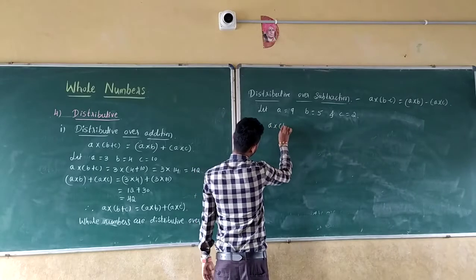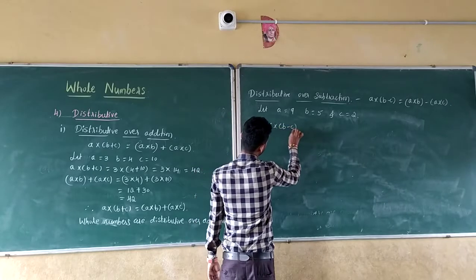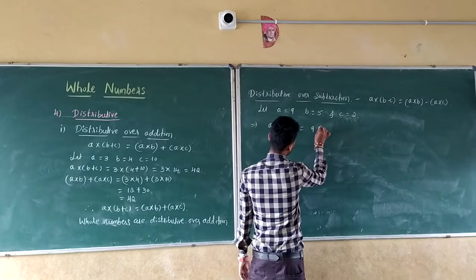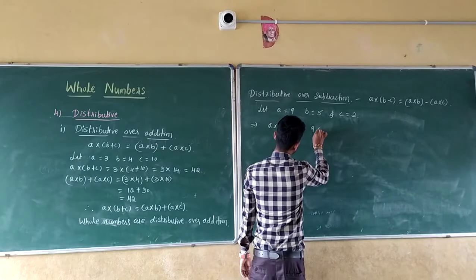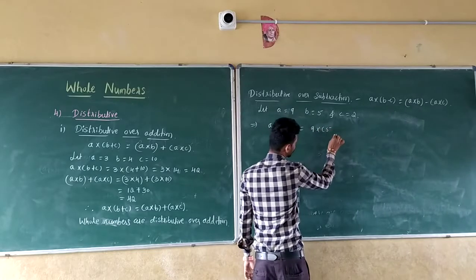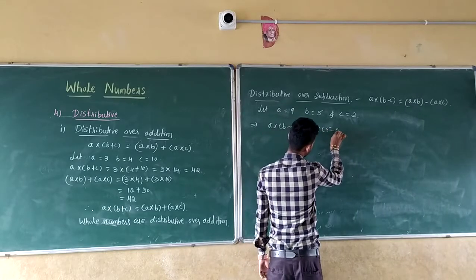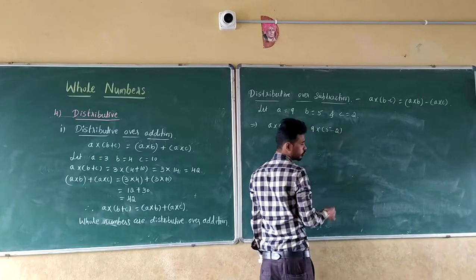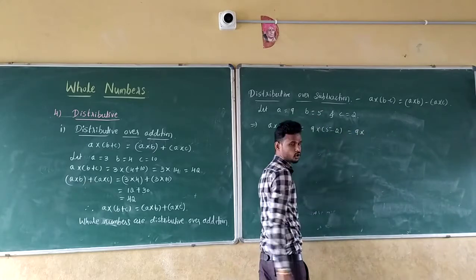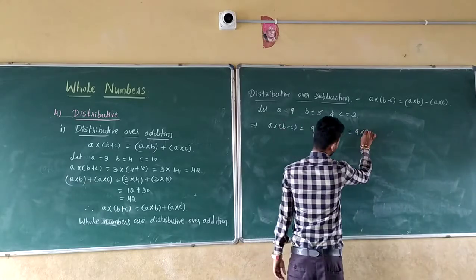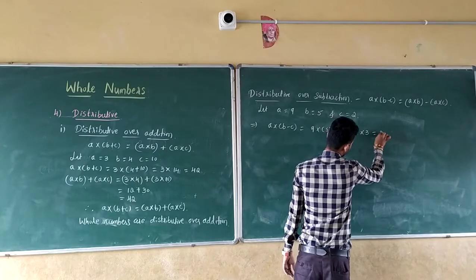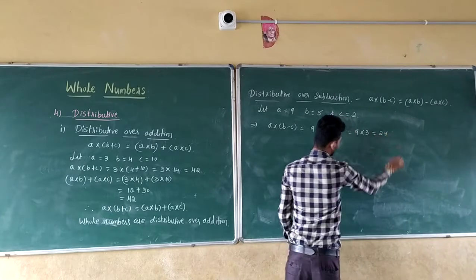A into (B minus C): A is 9, into B which is 5, minus C which is 2. So 9 into (5 minus 2) equals 9 into 3. Nine 3s are 27.